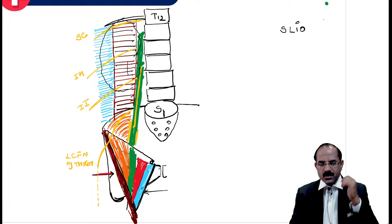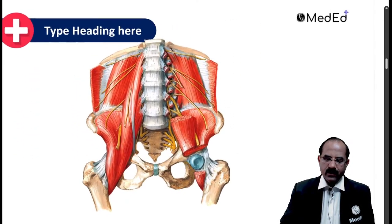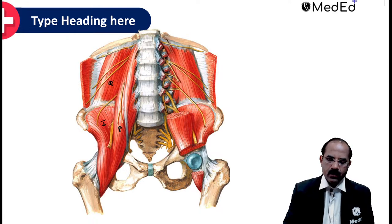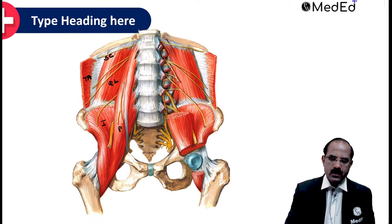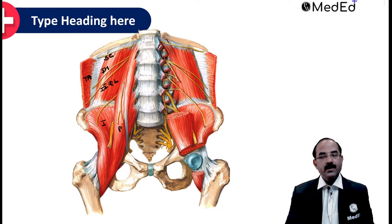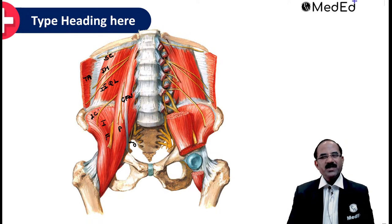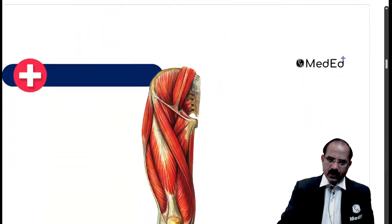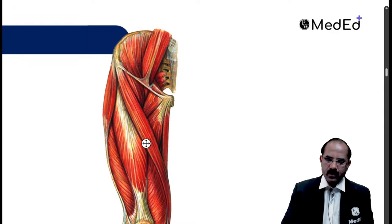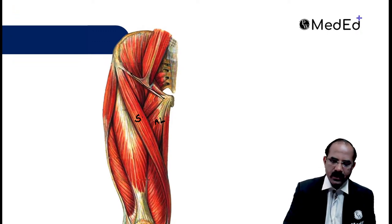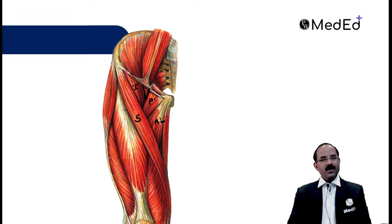Let's review the femoral triangle slide. Psoas major, iliacus, quadratus lumborum, transverse abdominis - and the nerves: subcostal, iliohypogastric, ilioinguinal, lateral cutaneous nerve of thigh, femoral nerve, obturator nerve, and genitofemoral nerve. In the femoral triangle: laterally is sartorius, medially is adductor longus, the base is the inguinal ligament. The floor is formed by iliacus, psoas major, pectineus, and adductor longus.